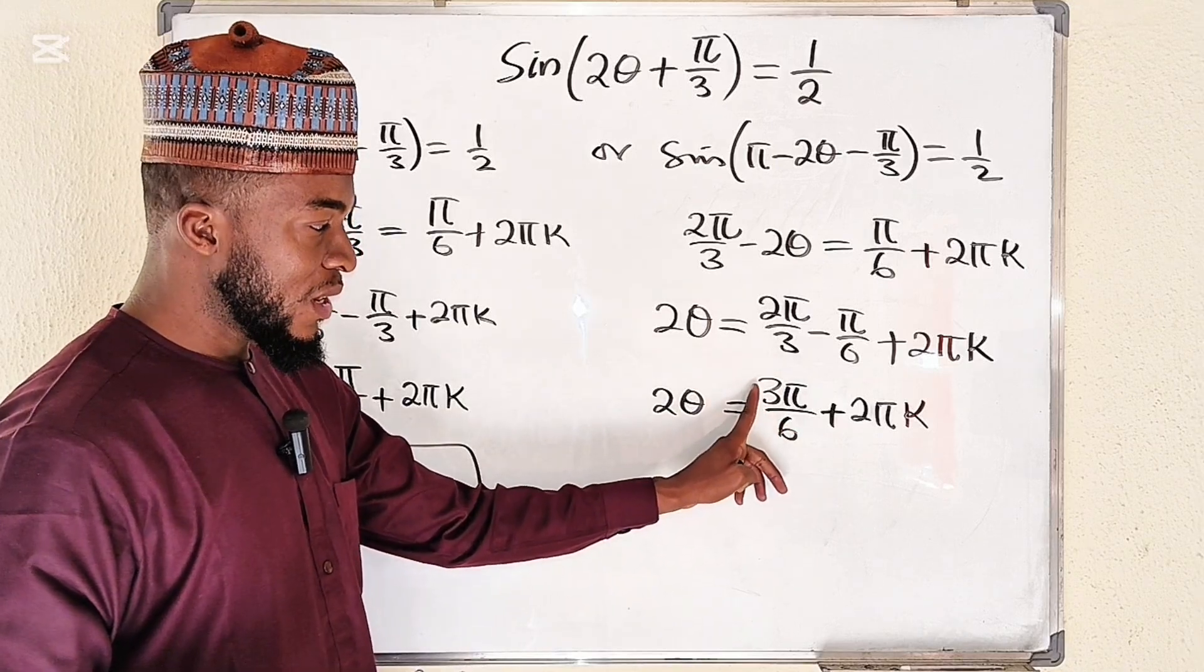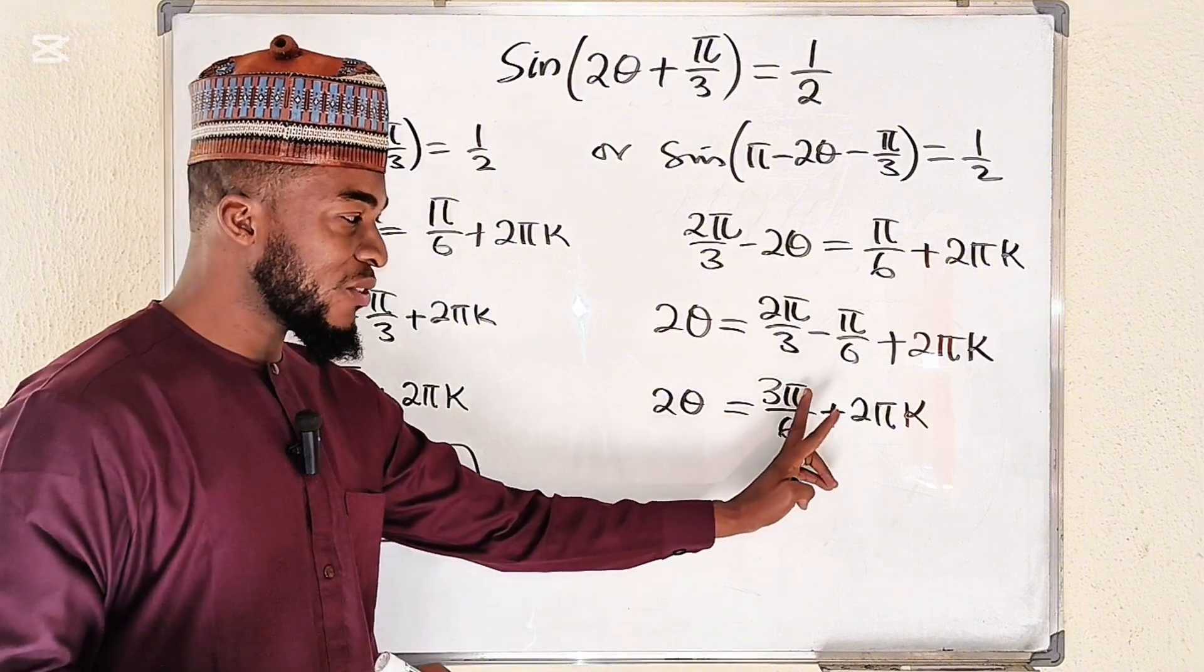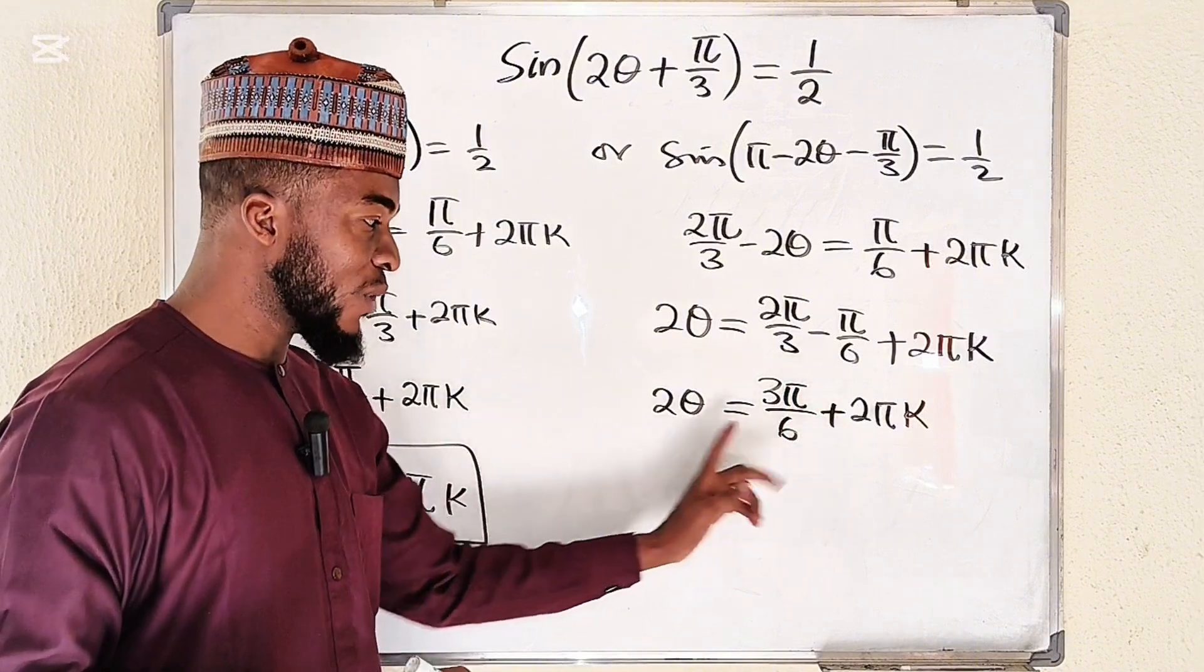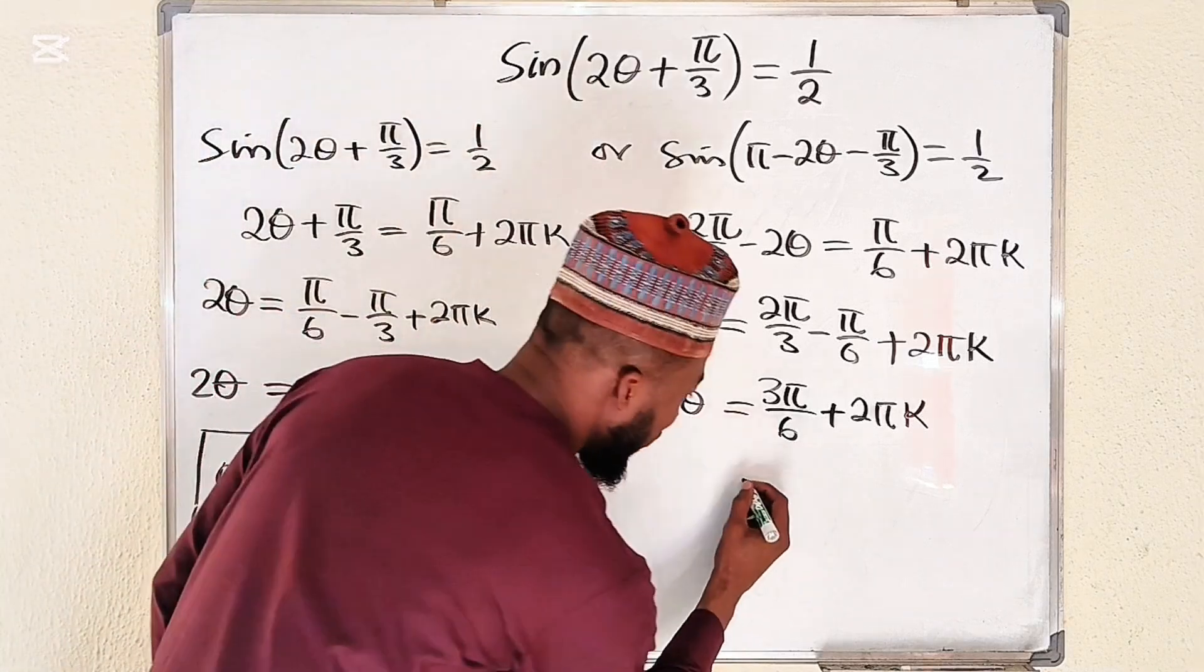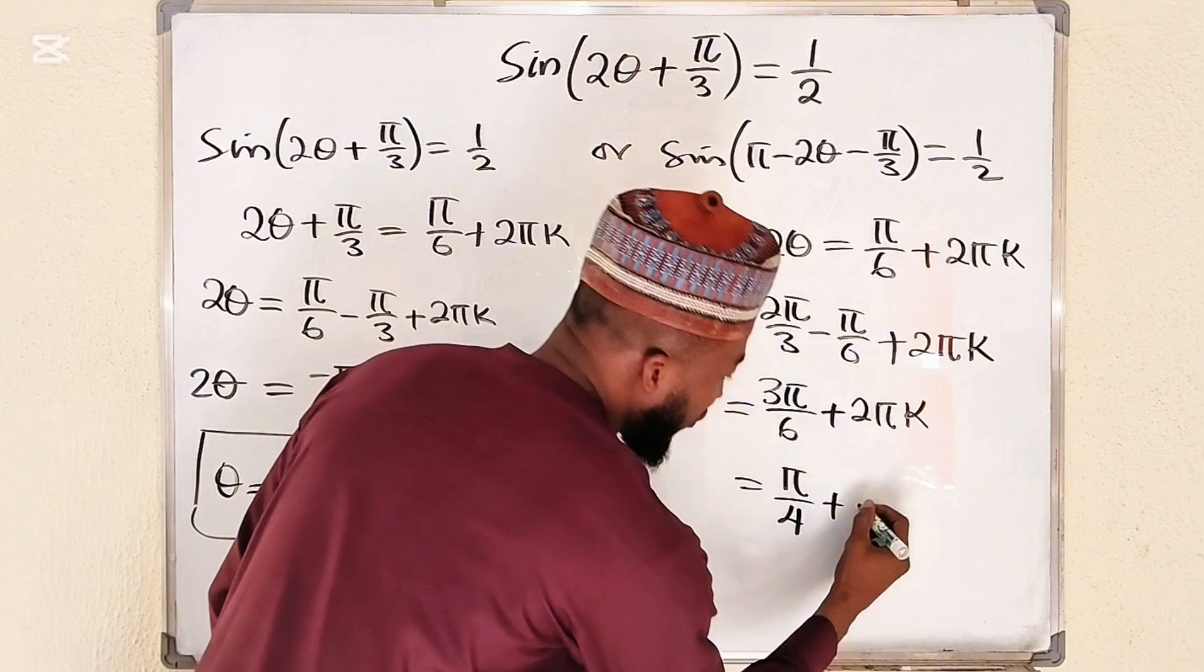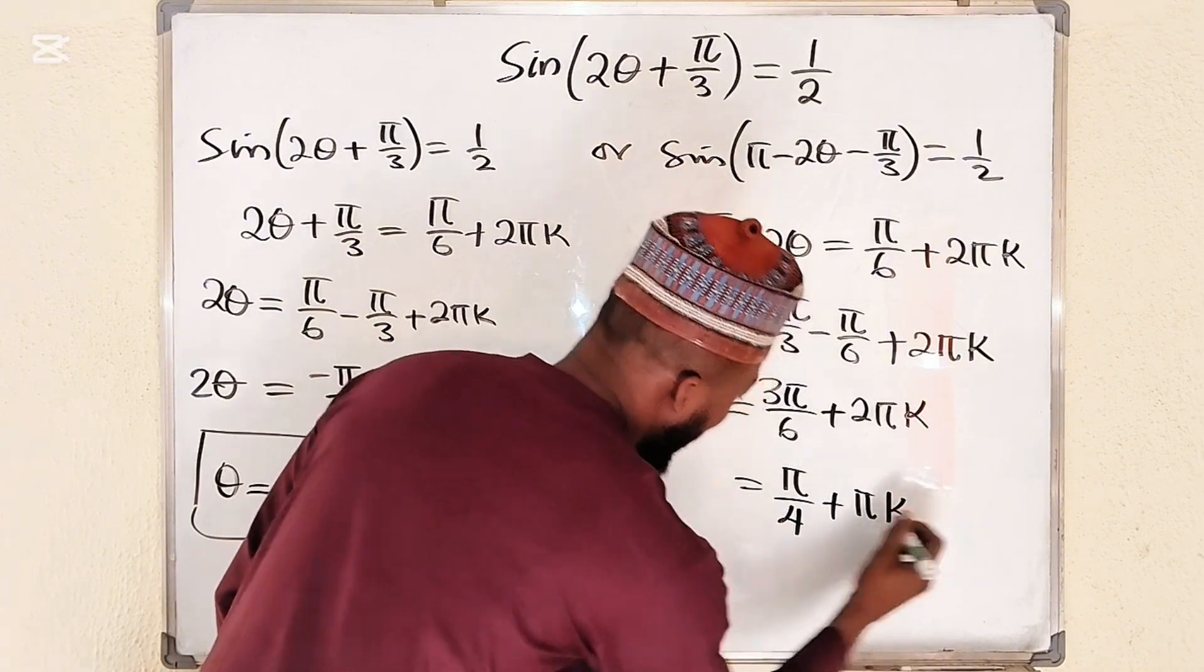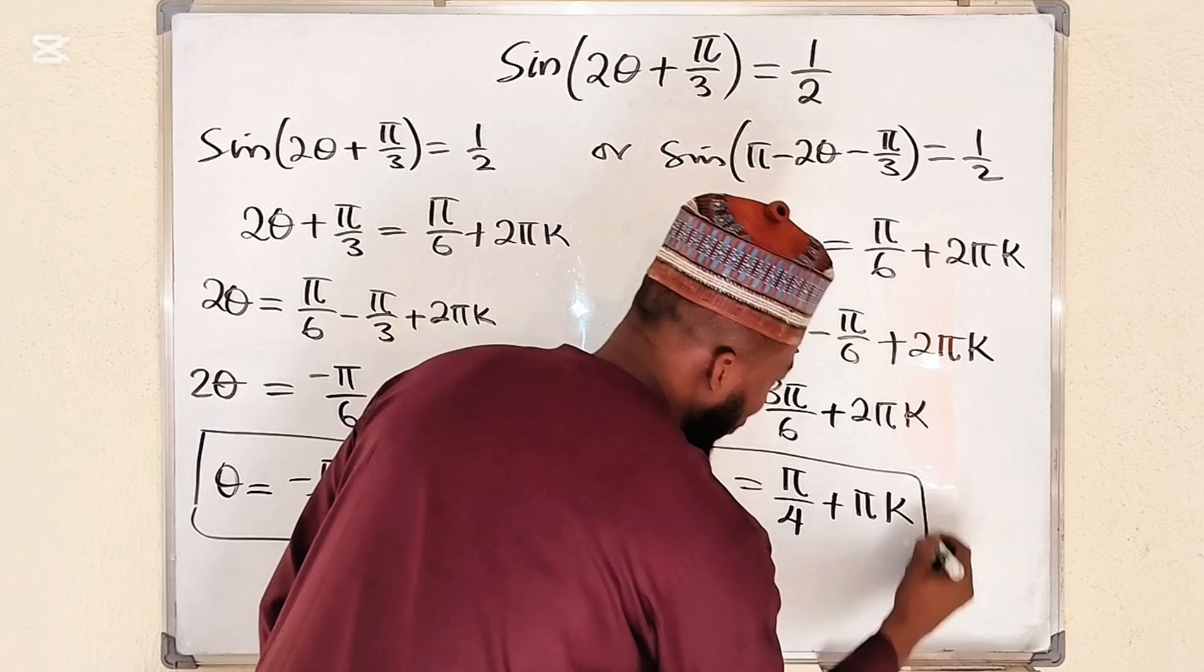As you divide by 2 it becomes pi divided by 4, so this is pi divided by 4 plus you divide this by 2 it becomes pi k, and this will remain theta. Hence this is our second solution.